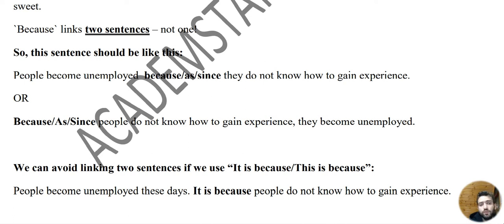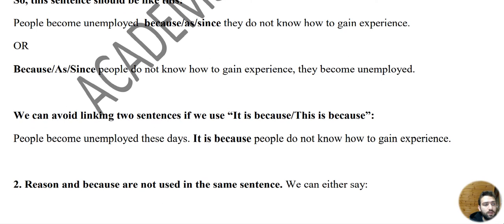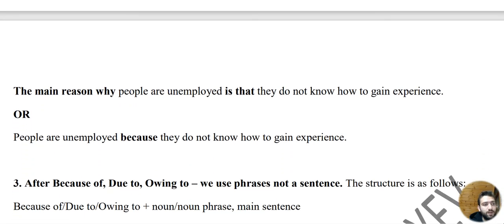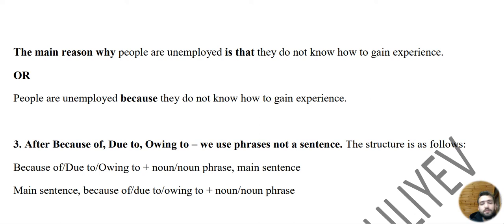We can also use this sentence type in a different way. For example, we can use the phrase 'it's BECAUSE' or 'this is BECAUSE': 'People become unemployed these days. It is BECAUSE / This is BECAUSE people don't know how to gain experience.' For the second type: 'The main reason why people are unemployed is THAT they don't know how to gain experience.' Not 'is BECAUSE' — it's THAT.